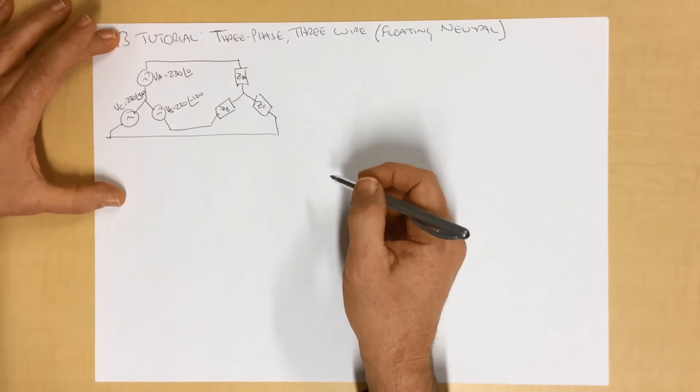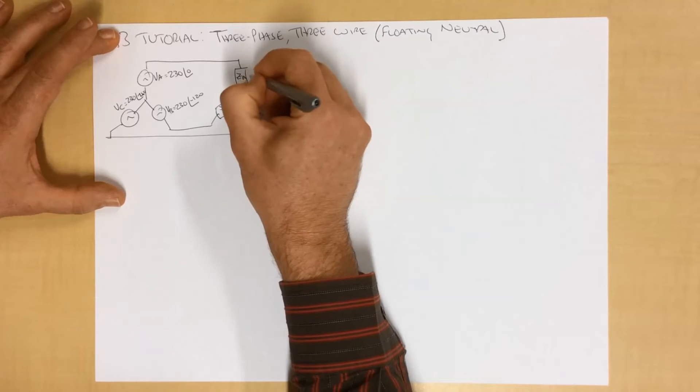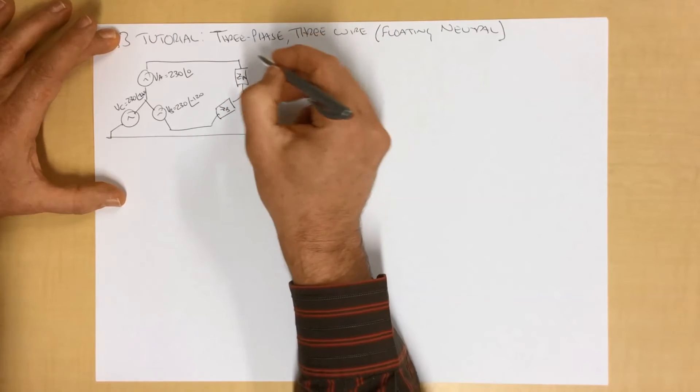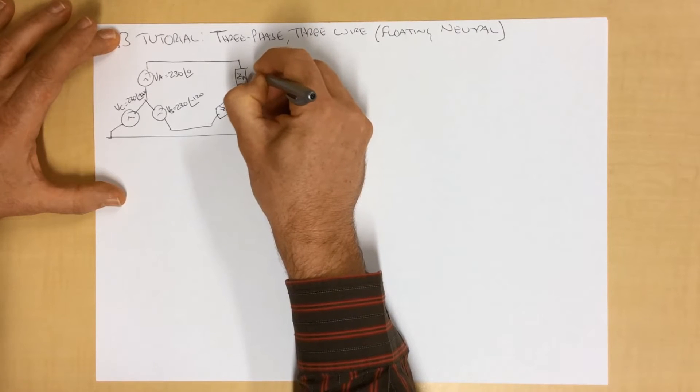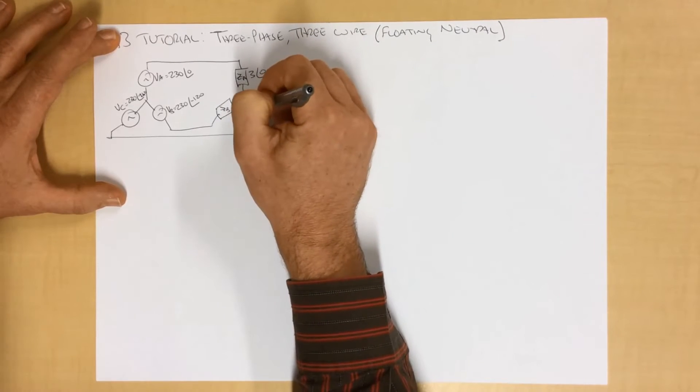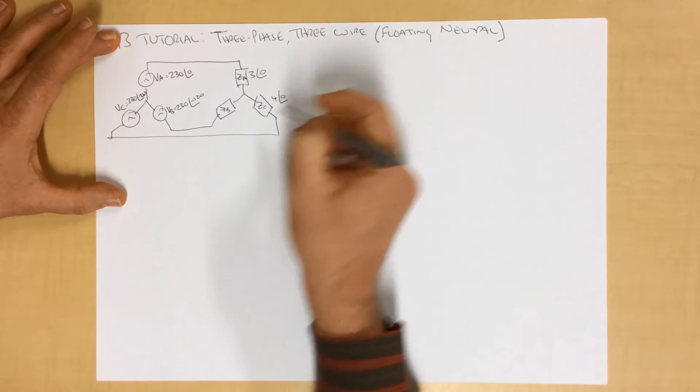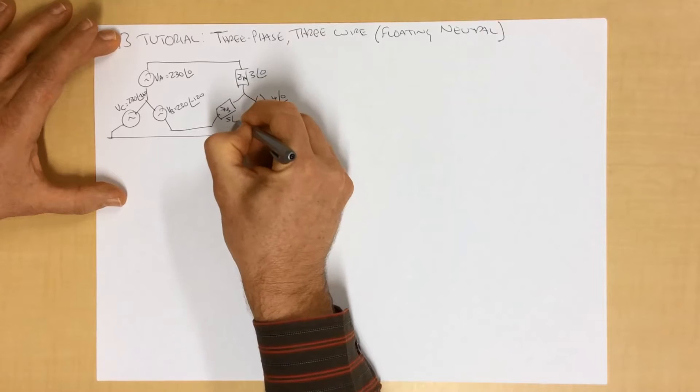So let's call it, we'll keep with purely resistive loads just to make it a little bit easier. We'll call ZA 3 ohms. We'll call this one here 4 ohms, and we'll call ZB 5 ohms.